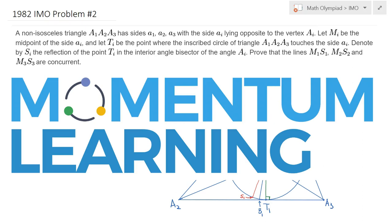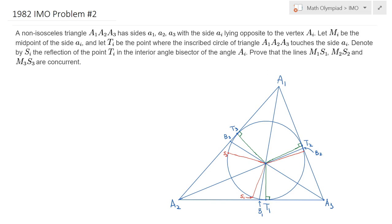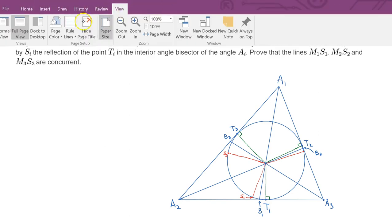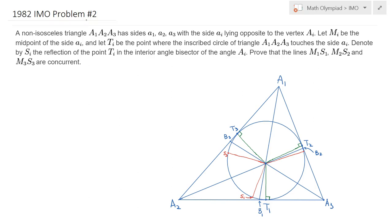This is 1982 IMO Problem 2. The picture shows a scalene triangle A1 A2 A3 — non-isosceles — where the sides have lengths a1, a2, and a3. M1, M2, M3 are the midpoints of the sides. I did not mark them in the picture because it already has so many points, making it harder to keep track of things.